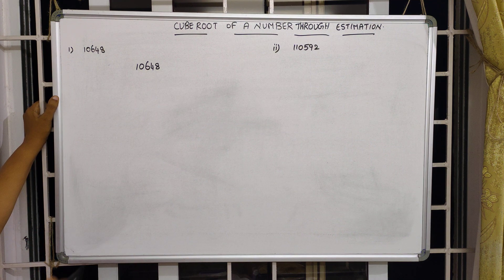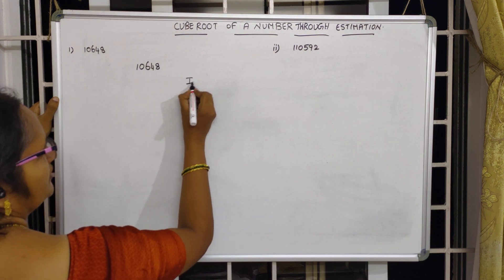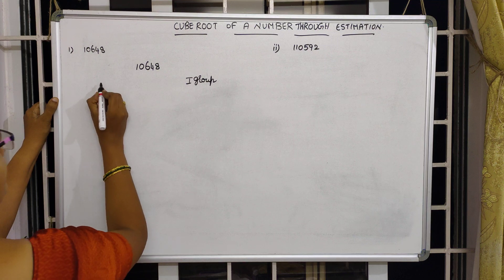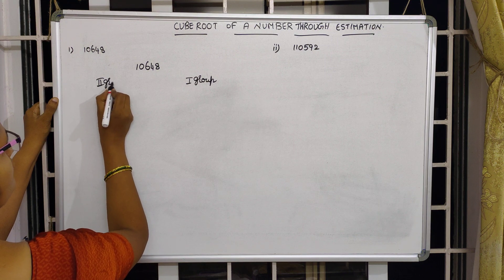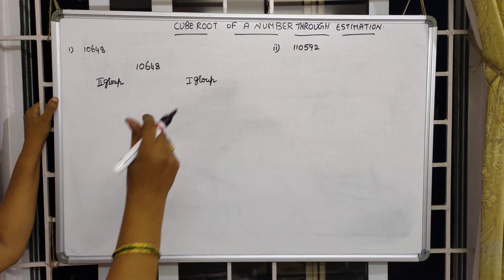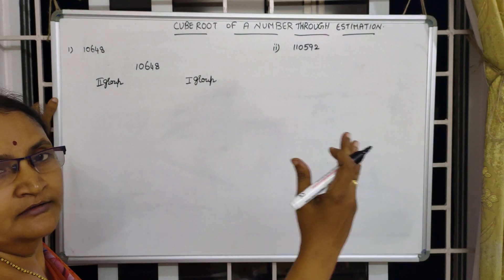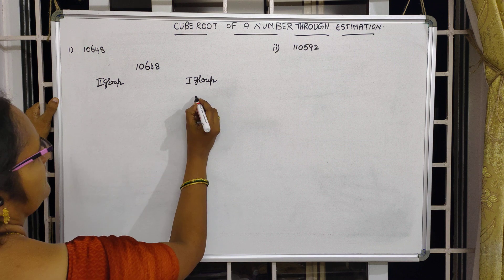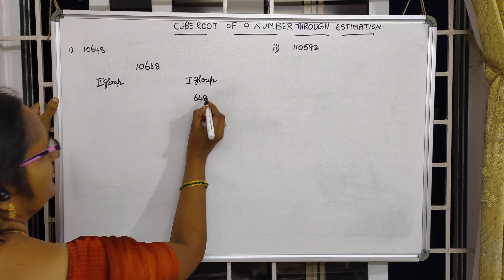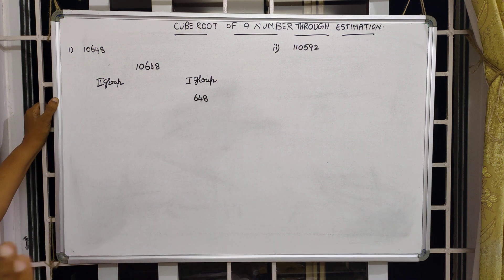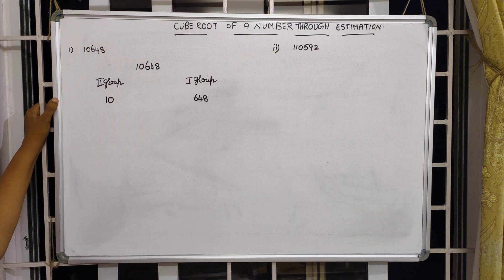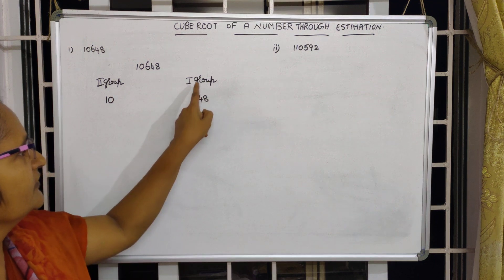We divide into two groups. The first group answer will follow in the ones place. For the first group, from the right-most end, consider three digits: one, two, three digits. Those three digits are 6, 4, 8 and they form the first group. The remaining numbers will come under the second group.